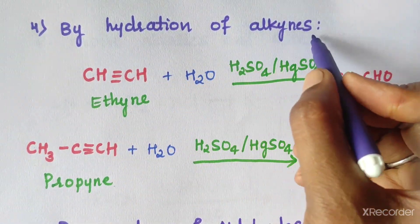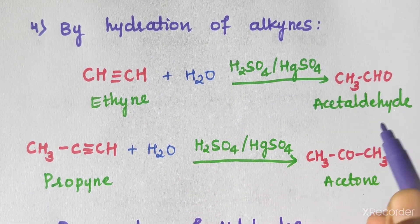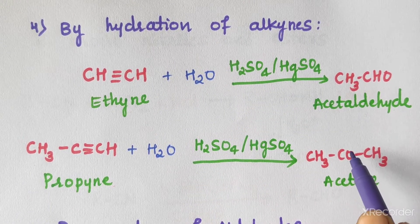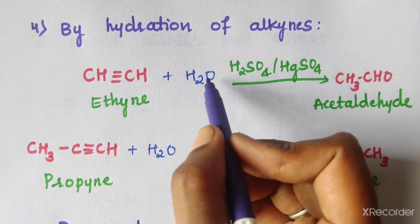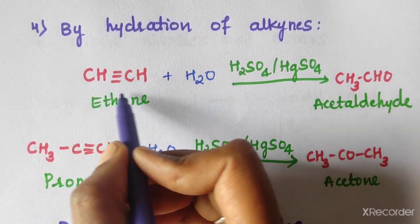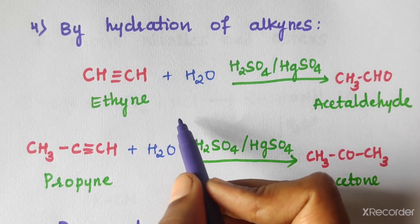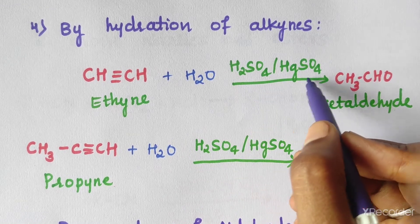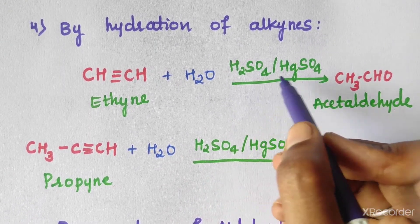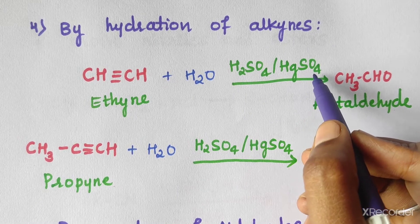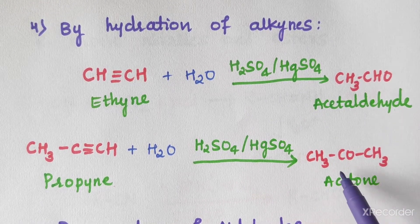The fourth method is by hydration of alkynes. Alkynes contain a triple bond. Water is added across the triple bond of an alkyne in the presence of dilute H2SO4 and HgSO4 catalyst, giving aldehydes and ketones.